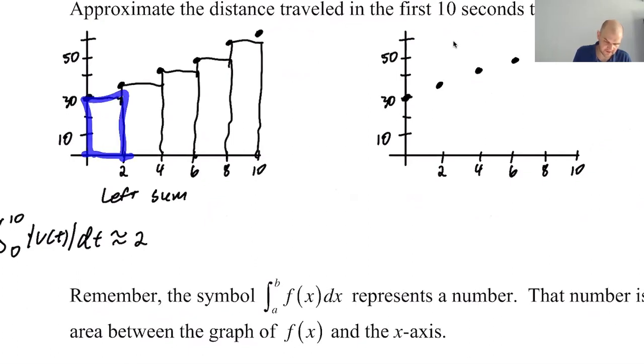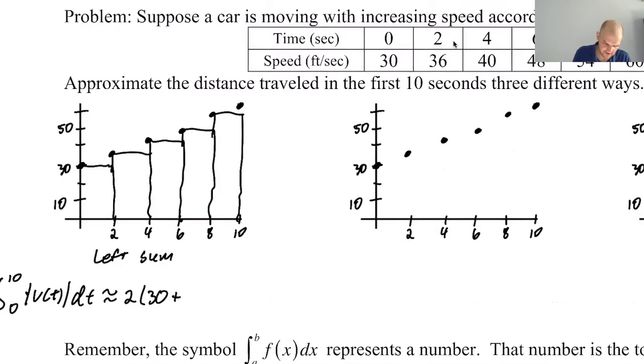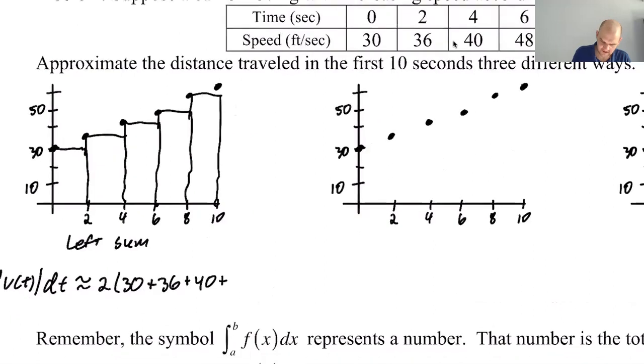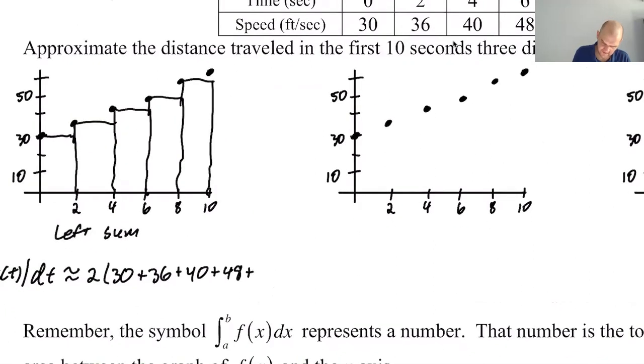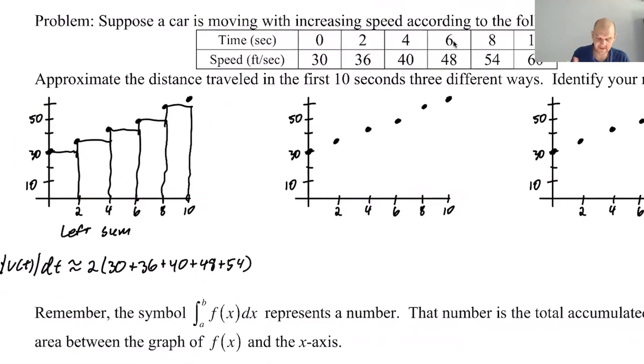So we're gonna say the integral from 0 to 10 of the absolute value of V of T because that speed is approximately, all right so the first one, so now all of them have 2 as kind of their base, every rectangle. I'm gonna factor that out and say like the first one, this rectangle is 2 by 30 so 2 and then I'll do 30 plus the next rectangle is 2 by 36 so 36 plus the next one has a height of 40 then a height of 54 and a height of—no, of, did I do them all? 1, 2, 3, 4, 5. I skipped 48. You got to be calm when you do these things.